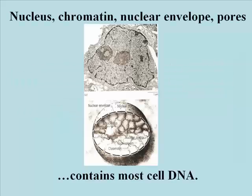Let's start with the nucleus. The upper TEM shows what a nucleus looks like in situ — that's Latin meaning in place, in a cell. This is of course a cross-section of the cell. The lower cartoon should remind us that the nucleus is surrounded by a double membrane, and that the double membrane is perforated — it has nuclear pores.